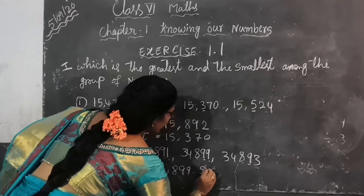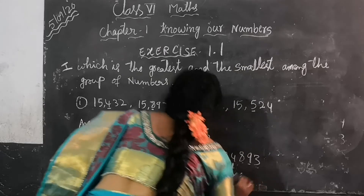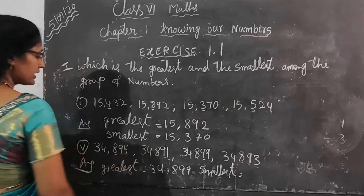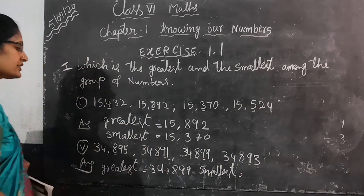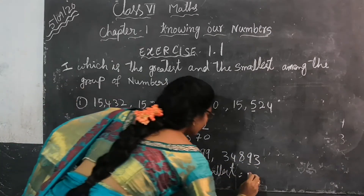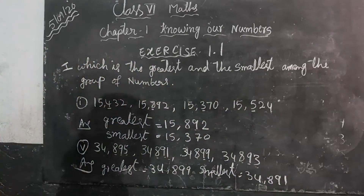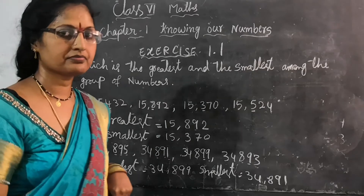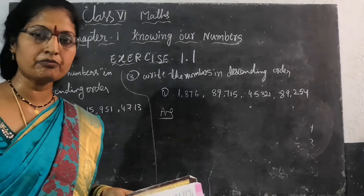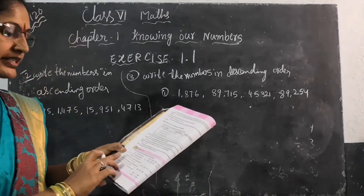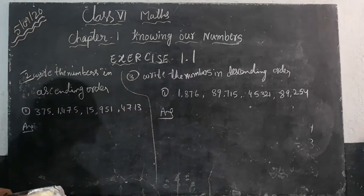Now the smallest number — looking at the 1's place: 5, 1, 9. The smallest is 1, so 34,891 is the smallest. Now students, we are going to Exercise 1.1, the second bit. Write the numbers in ascending order — how we have to write the ascending order?